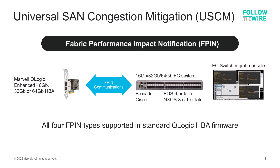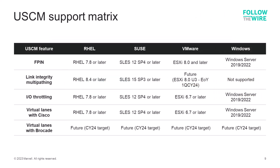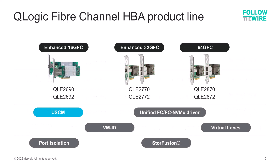USCM is enabled in current versions of Q-Logic Fiber Channel HBAs and those dating back as far as 2022. Here is a matrix summarizing what OS support is available for the different SAN congestion management capabilities in Marvell Q-Logic HBAs today. The portfolio includes the QLE 2690 series, QLE 2770 series, and QLE 2870 series HBAs, all of which support Universal SAN Congestion Mitigation in addition to many other features discussed in other Follow-the-Wire videos.